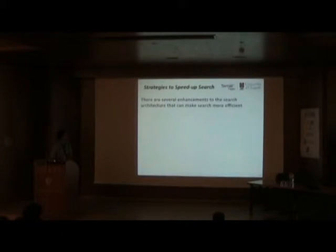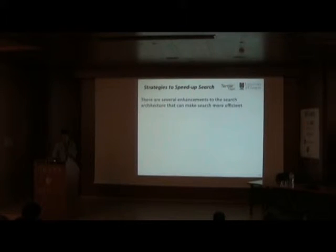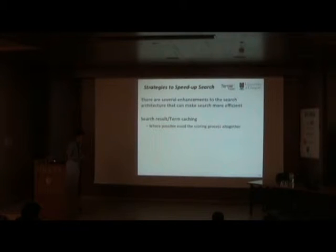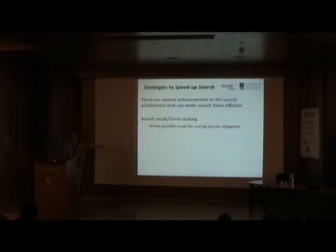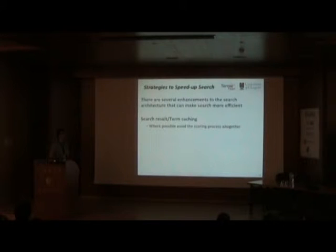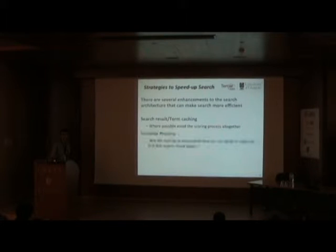I'm going to talk about a couple of strategies that are almost always deployed to ensure an efficient search architecture. One of these is caching — we can cache the search result, so if we've seen that query recently we can return the result straight back to the next user. We can also cache some of the posting lists, avoiding document scoring where possible. I'll also talk about dynamic pruning — looking at the posting list and avoiding scoring documents that we know will never make the final ranking.